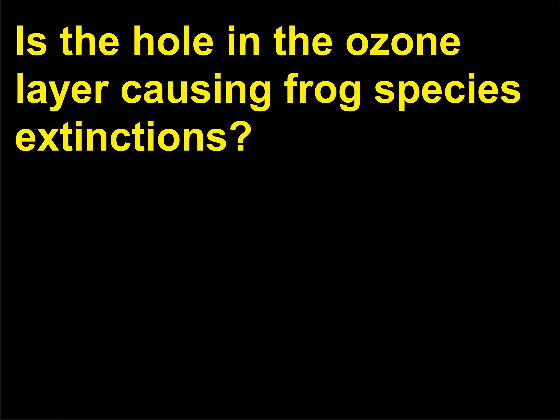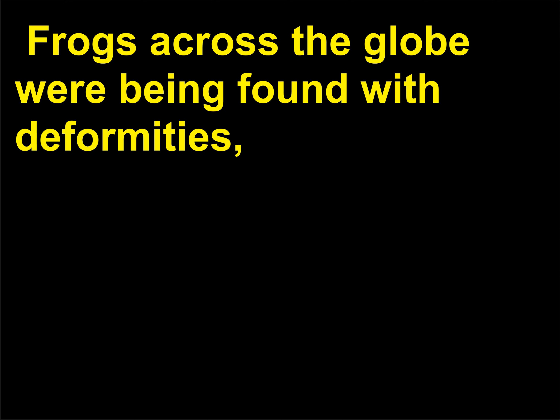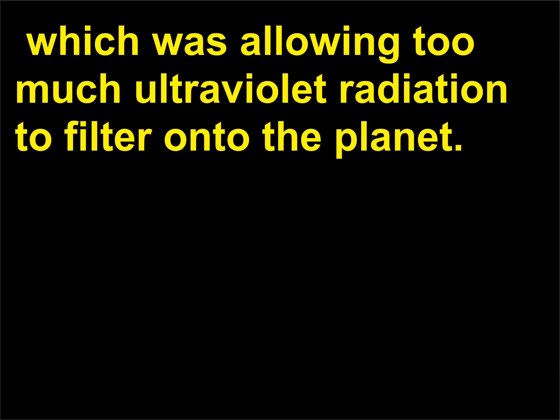Is the hole in the ozone layer causing frog species extinctions? Biologists have known for a long time that frogs are very vulnerable to changes in their environment. Frogs across the globe were being found with deformities, such as extra legs, and species were going extinct. By the mid-1990s, it was still being speculated that the cause of the mutations was the weakened ozone layer, which was allowing too much ultraviolet radiation to filter onto the planet.